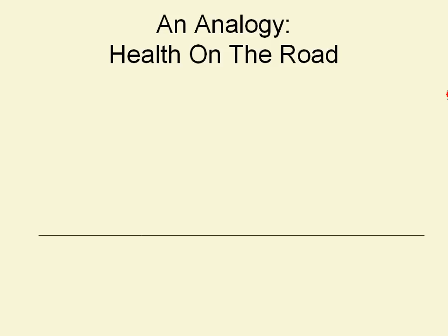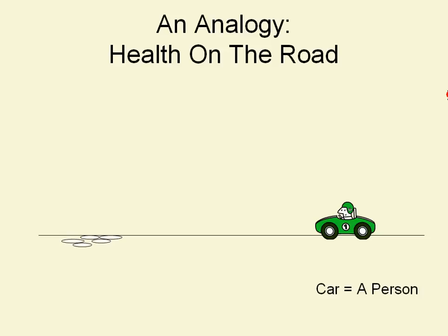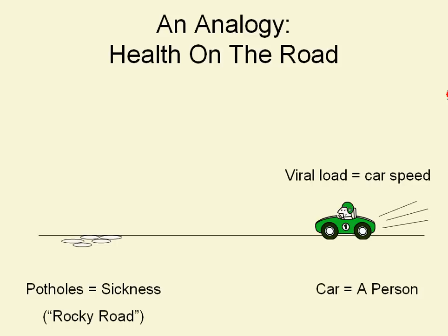Here's an analogy for thinking about CD4 and viral load — I call it 'health on the road.' We have a road, a car, and potholes on the road. The car represents a person — a person living with HIV. The potholes represent sickness or a rocky road, a section we don't particularly want to travel. The viral load can be considered the speed the car is traveling, and the CD4 cells are considered the distance to the potholes. It's possible to slow down the car so it doesn't get any closer to the potholes.